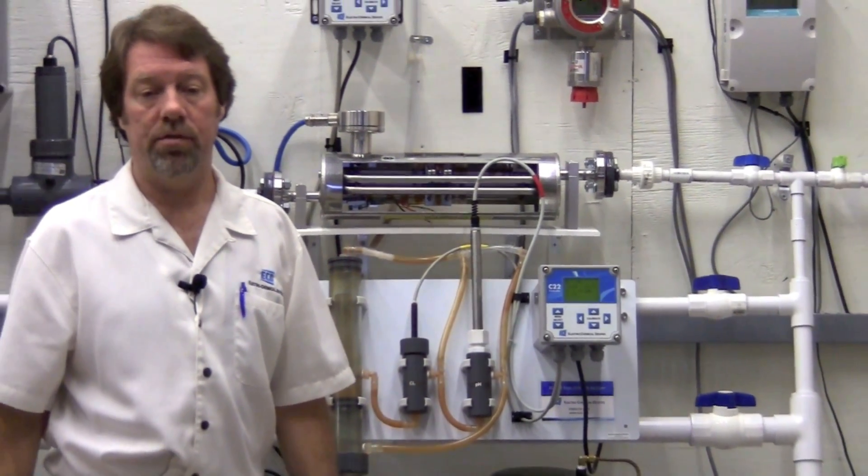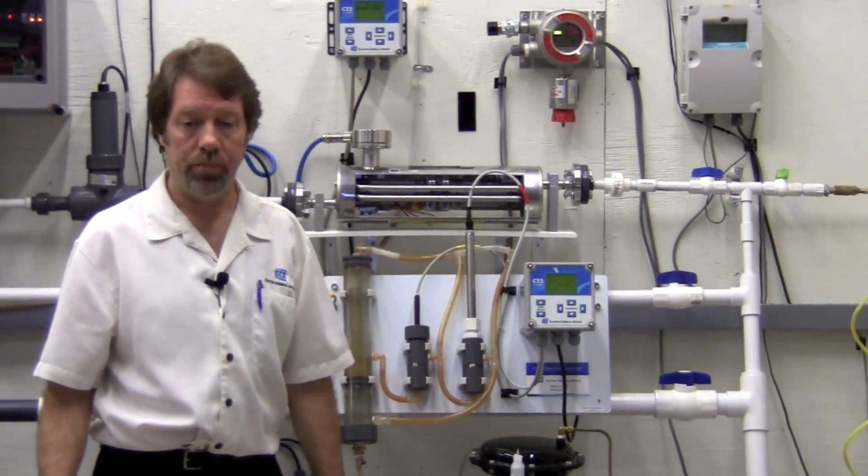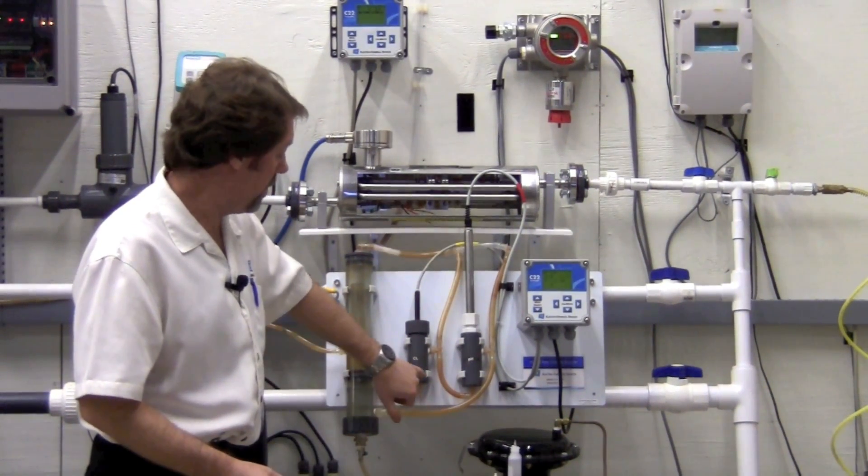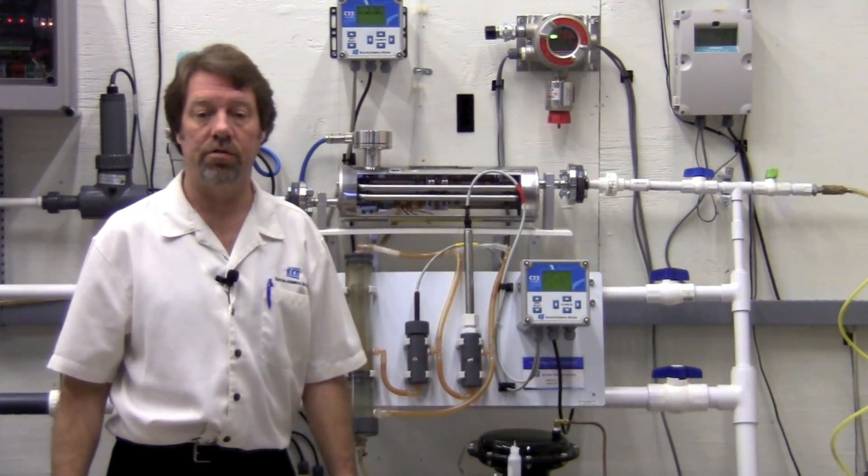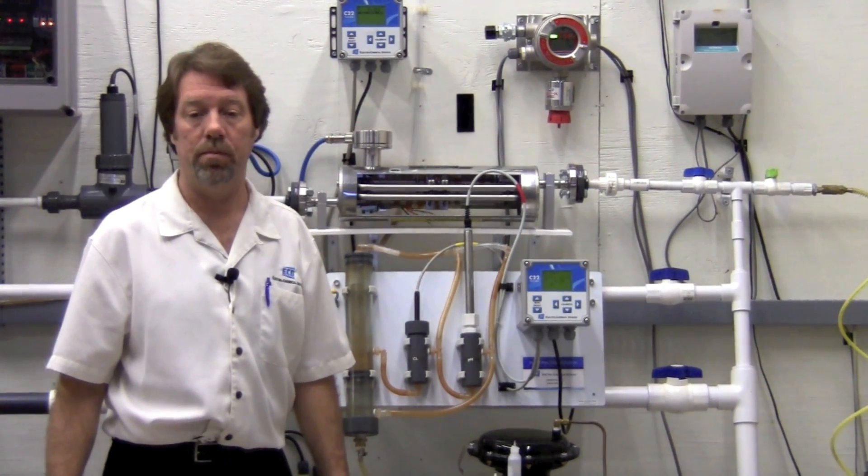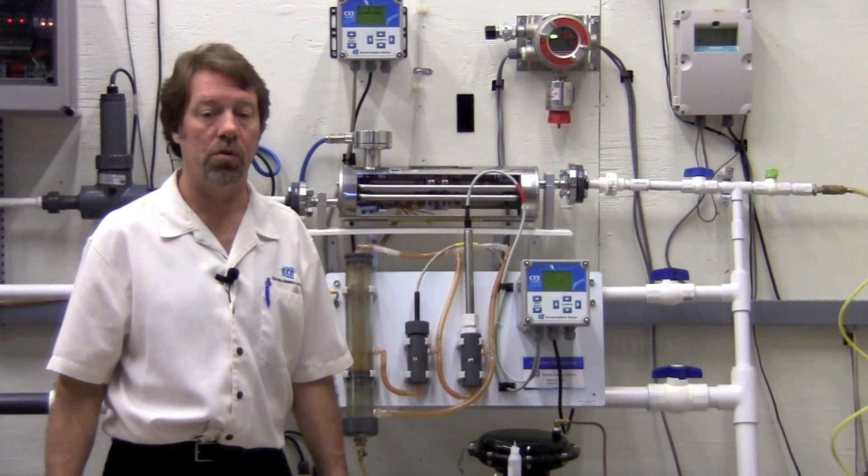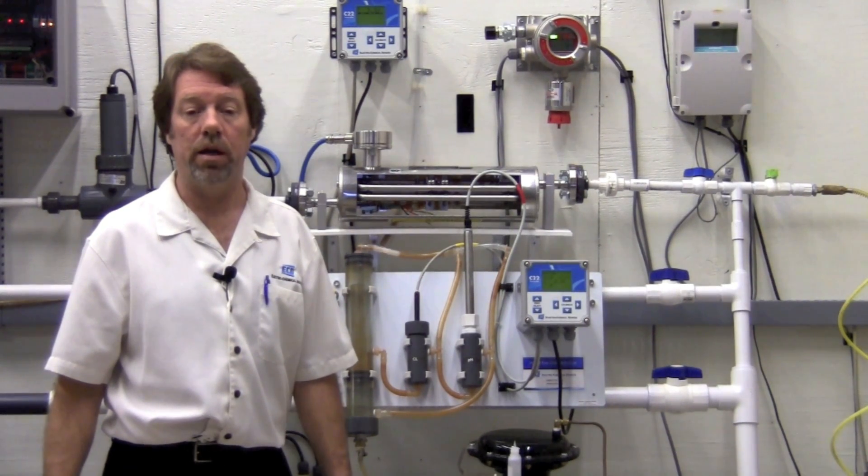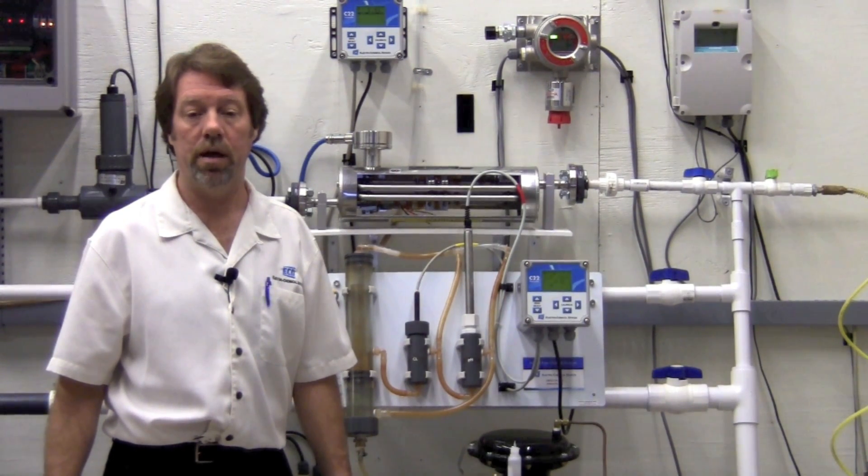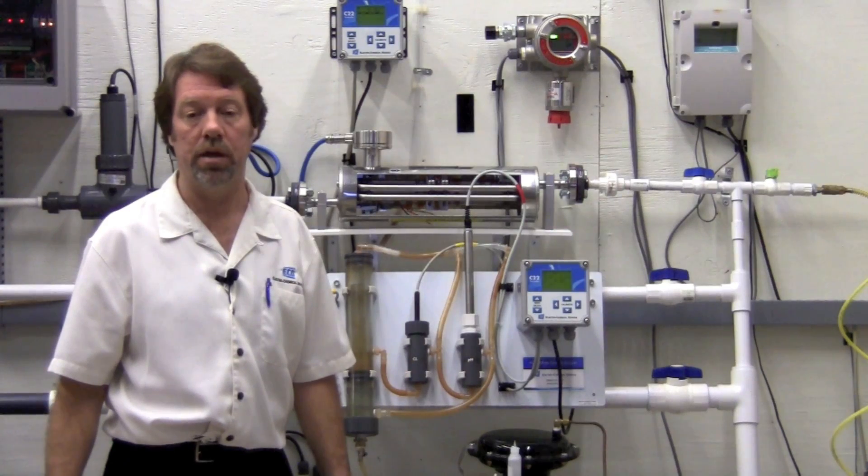Some of the system options is a spray jet cleaner nozzle which would be installed on the chlorine or the pH sensor flow cell if there is a buildup that's causing premature drift in the reading. ECD can supply the control solenoid for the spray cleaner along with the control relays and software logic for a complete cleaning system.